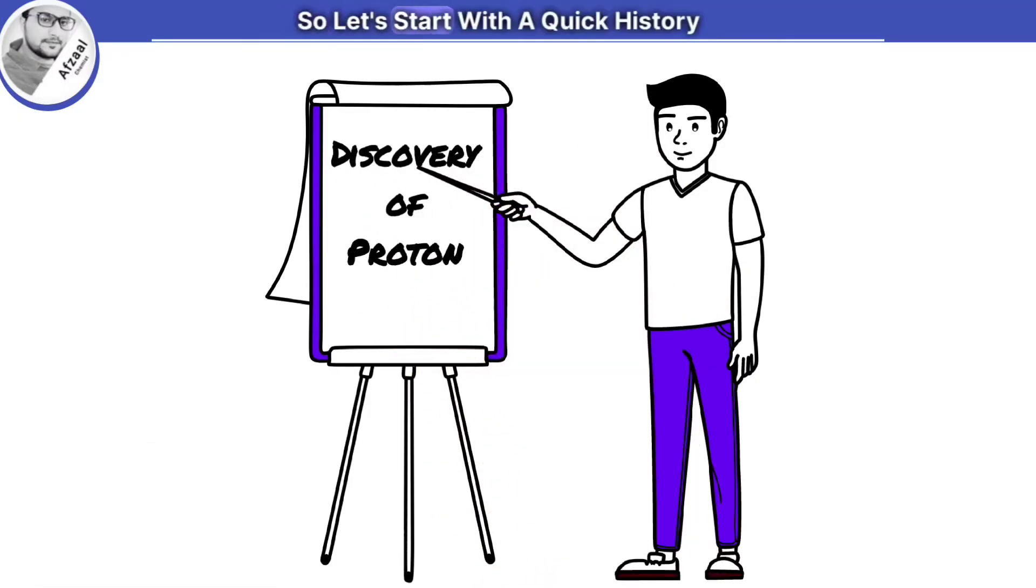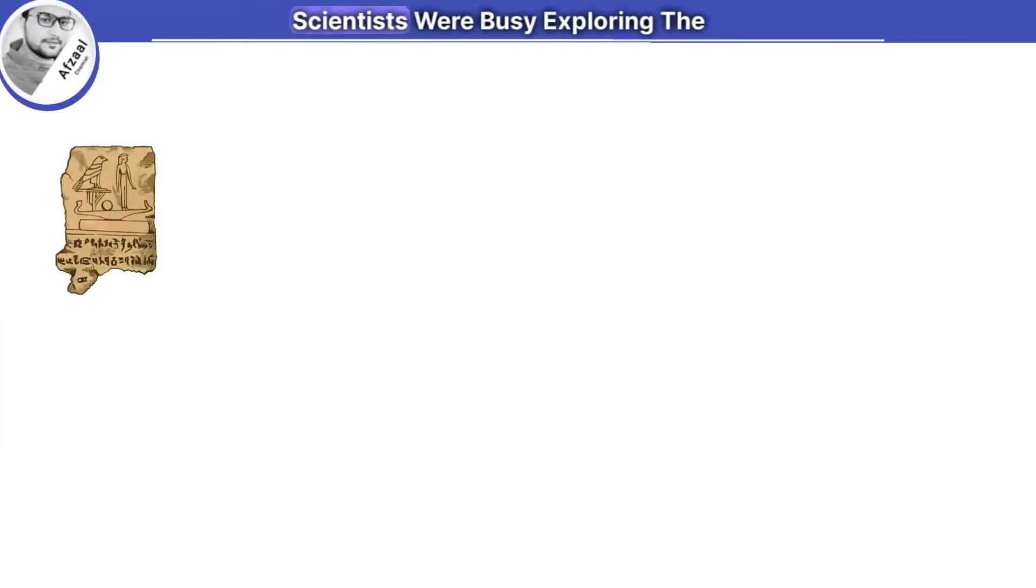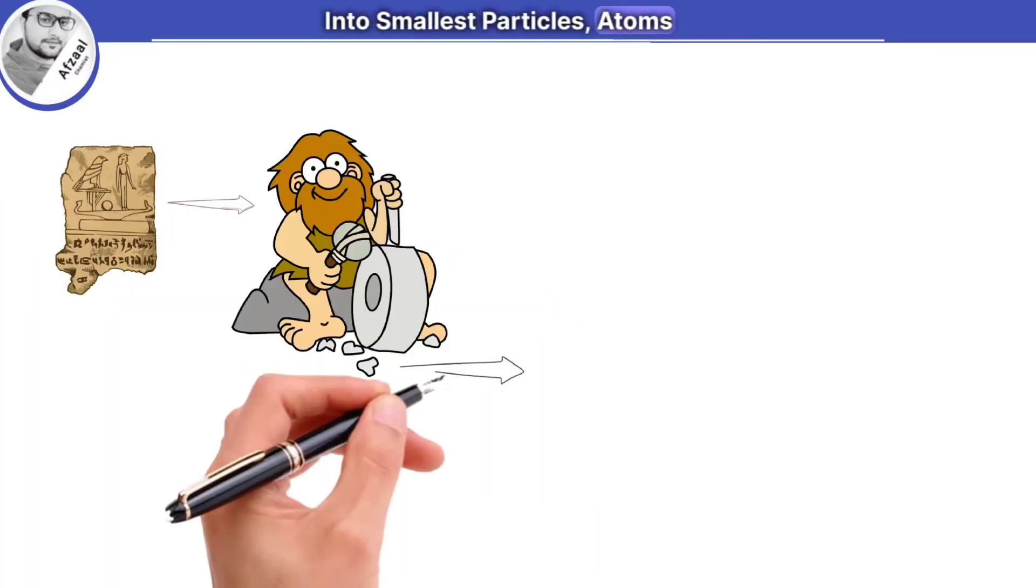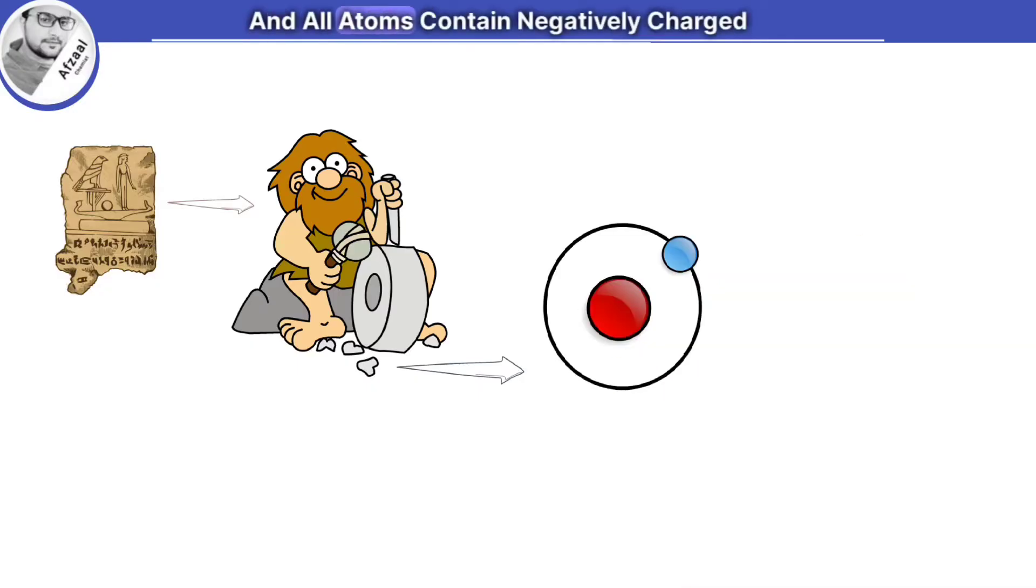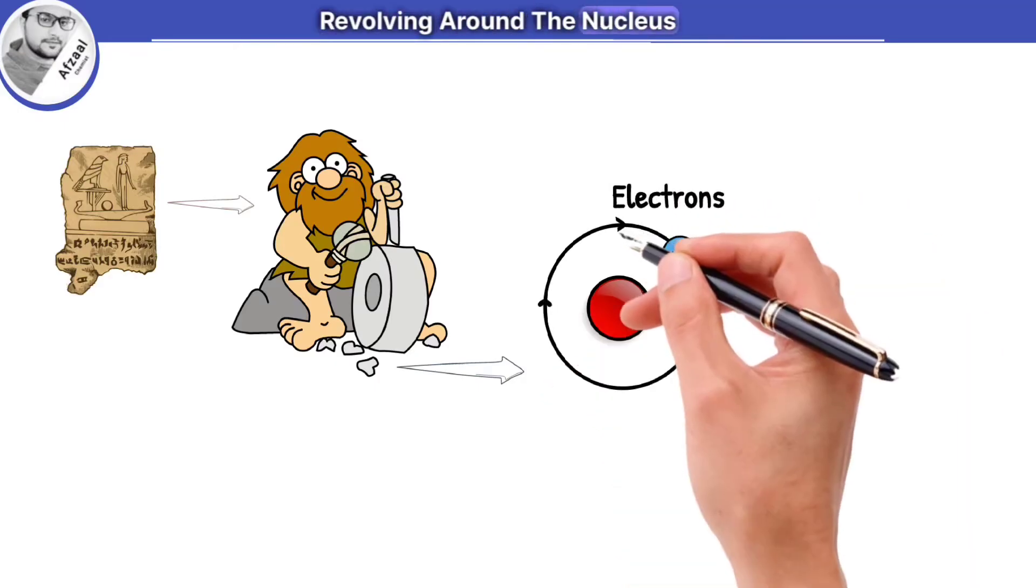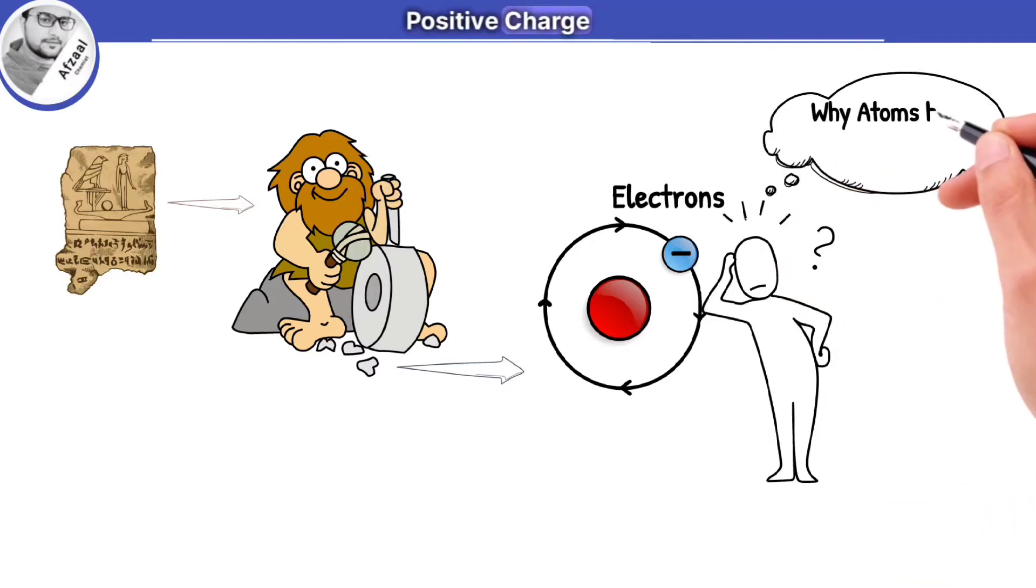So, let's start with a quick history. Back in the late 19th century, scientists were busy exploring the mysteries of atoms. They knew that when matter is divided into smallest particles as atoms, and all atoms contain negatively charged particles named as electrons that are revolving around the nucleus. But something was missing. They couldn't explain why atoms had a positive charge.